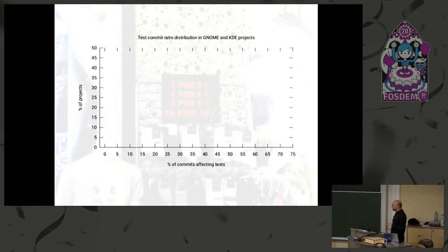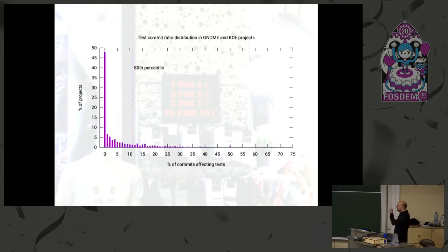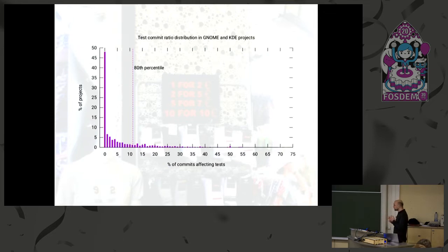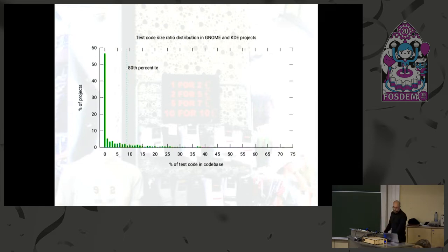Who wants to hazard a guess what this was going to look like? No brave ones here — but this is what I got. Notice the very tall line at the zero point — that means about 50% of the projects don't have any testing at all. That's kind of sad. And the line at 80% tells us that in 80% of the projects, at most 1 in 10 commits affects the test. For every nine changes you make to the code base, you only have one commit that touches the test. That's a very big red flag.